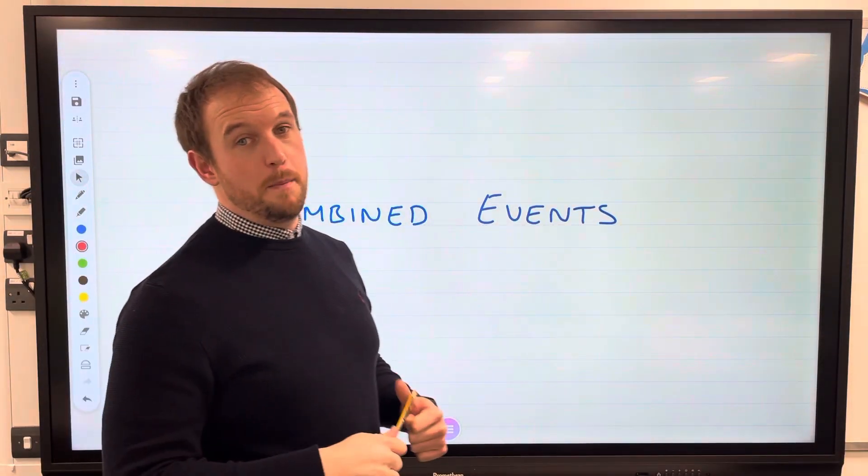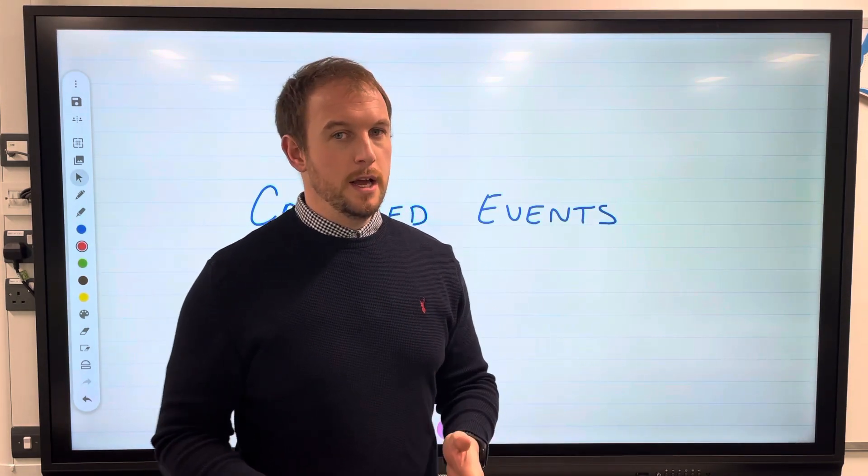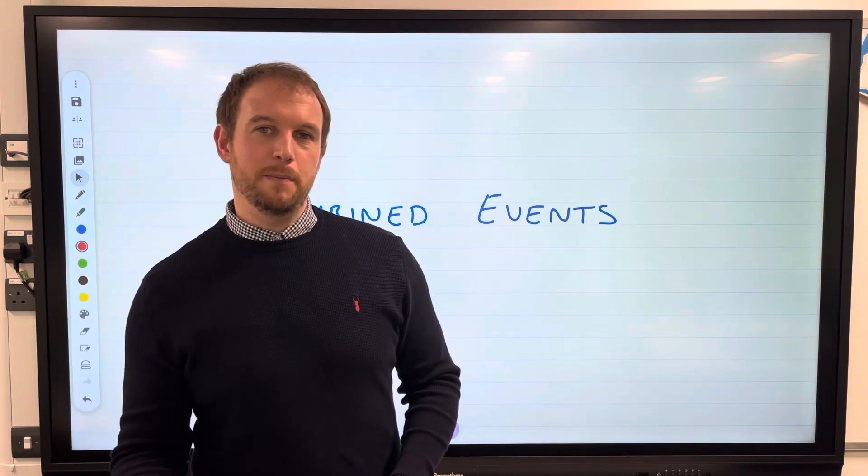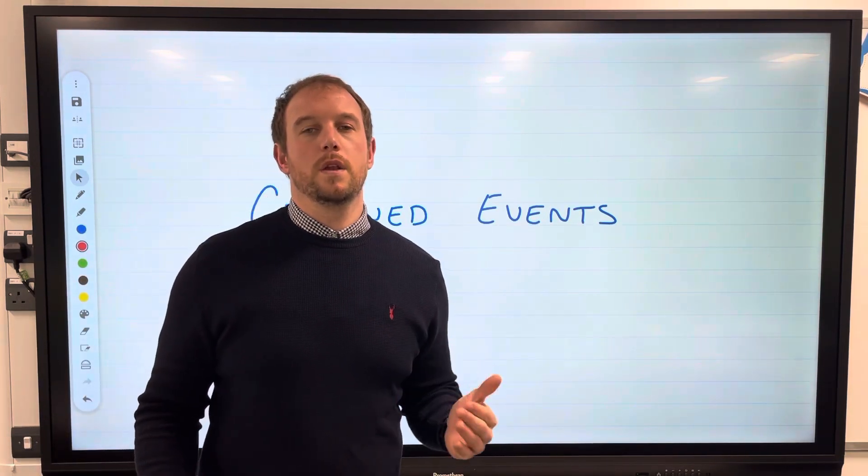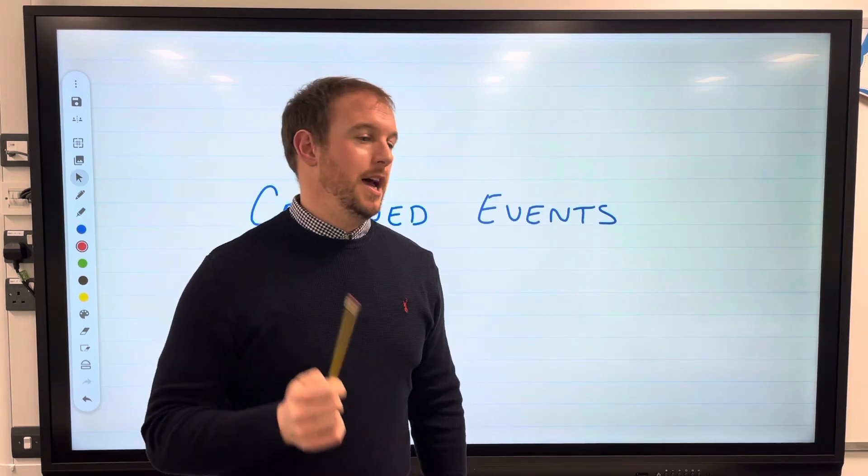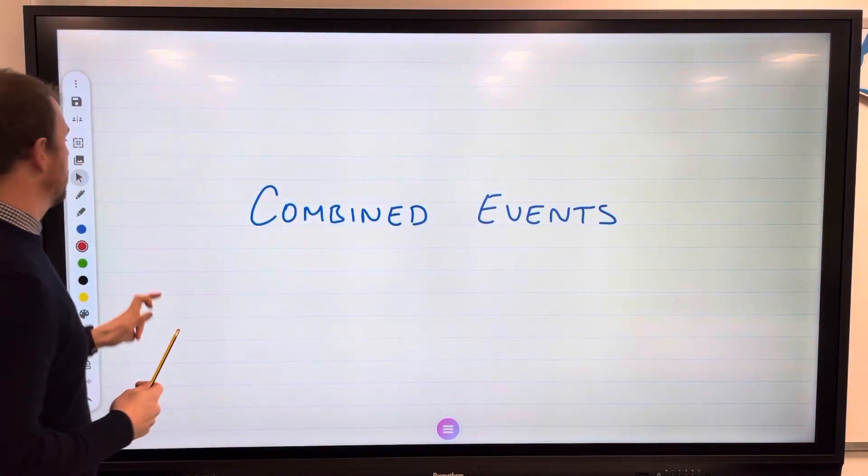Okay, so today we are looking at combined events. This does fall under the probability umbrella, but we need to start thinking about drawing some tables and listing all the different possible outcomes. Get yourself a pencil, a ruler, some colored pens and a highlighter, and we'll have a very good go at these.